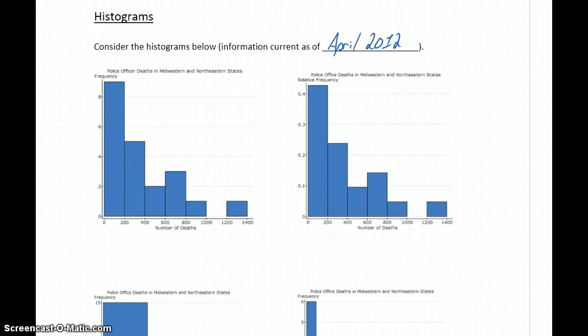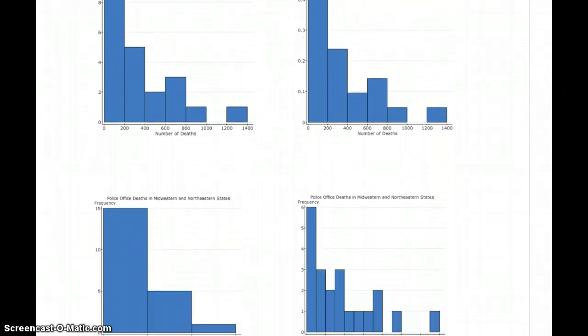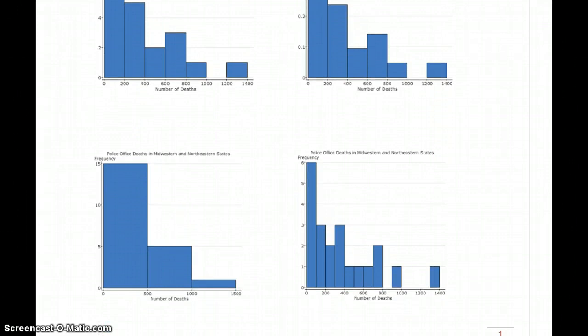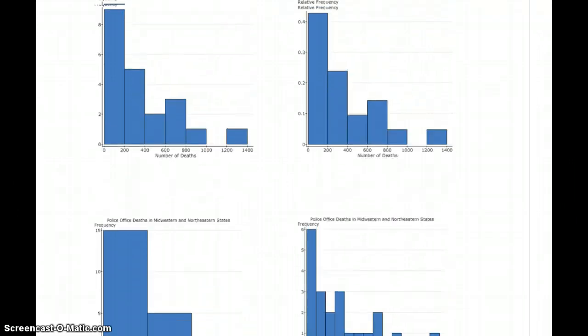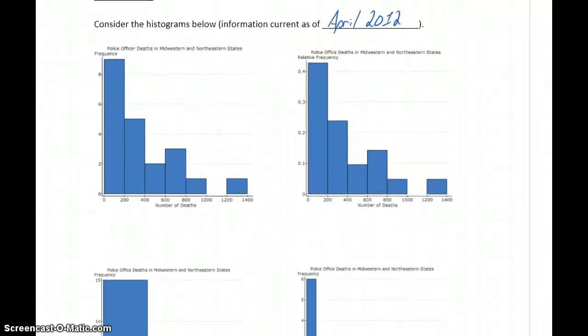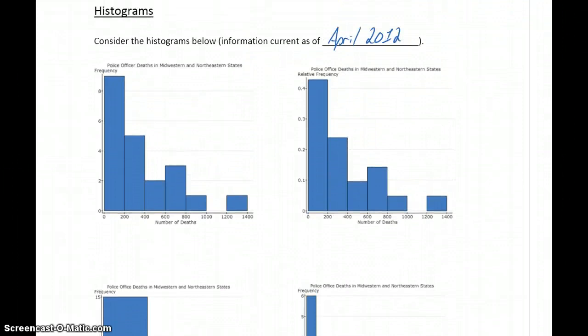What we have are actually four different graphs that all represent exactly the same information, just in slightly different ways. So we're going to take a look at each of these, talk about some of the similarities and differences, in general just what a histogram is, and then we'll move on after that to talking about how we interpret histograms, how we construct them, things like that.